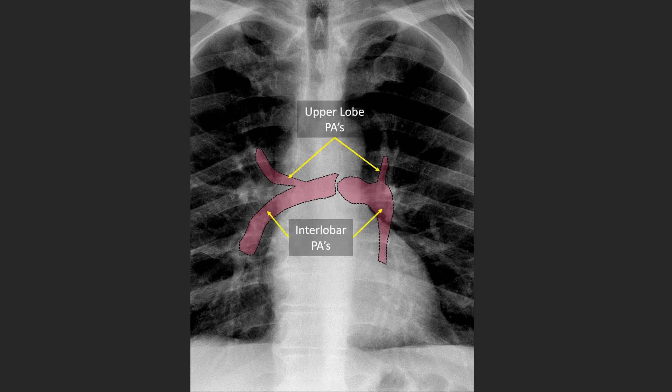Other relevant anatomy includes the upper lobe pulmonary arteries as well as the interlobar pulmonary arteries. The interlobar pulmonary arteries and the upper lobe pulmonary arteries are oriented much more vertically, as opposed to the more horizontally oriented main stem pulmonary arteries.